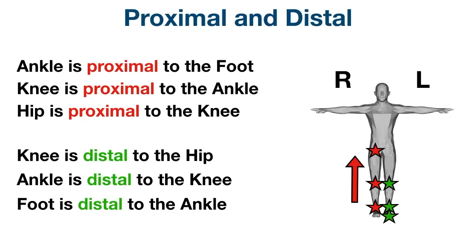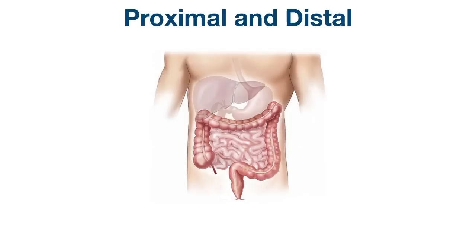Proximal and distal can also be applied to structures. For example, looking at the colon, the stool first travels up the ascending colon, then through the transverse colon, then down the descending colon. The red star on the ascending colon would be the proximal end of the colon — more specifically, the proximal end of the ascending colon. The green star is located more distal on the colon because it's farther away from the starting point — specifically at the distal end of the descending colon.